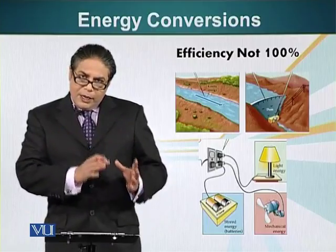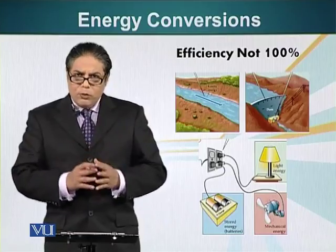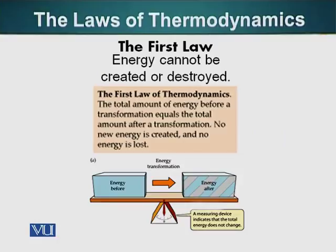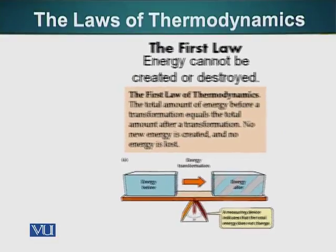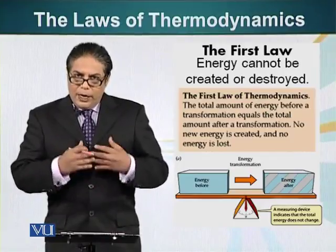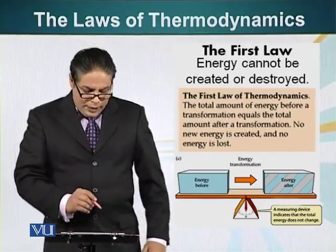So energy can be converted from one form to another. What are the rules that dictate energy conversions? The first law of thermodynamics states that energy cannot be created or destroyed. However, energy can be transformed from one form to another, but no new energy can be produced and it cannot be destroyed. That is the first law of thermodynamics.